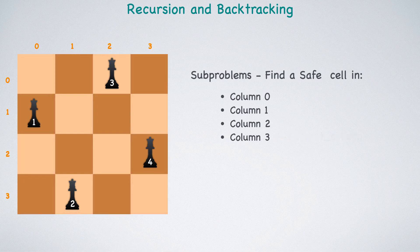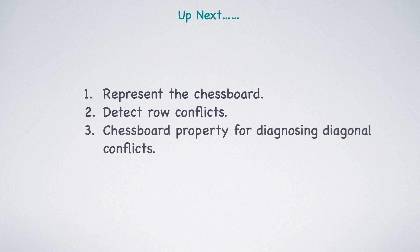Placing the first queen in the second row of the first column enables the successful placement of the remaining queens. So hopefully this example provides an insight into the workings of backtracking. Let's go over some topics we need to cover before reviewing the code. Up next we'll go over how we represent the chessboard, detect row conflicts, and go over a chessboard property for diagnosing diagonal conflicts.